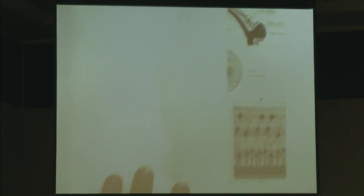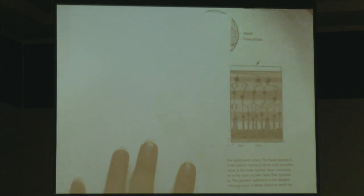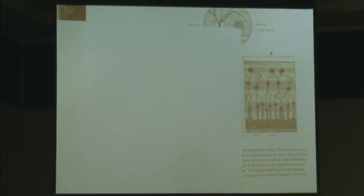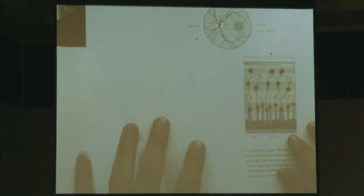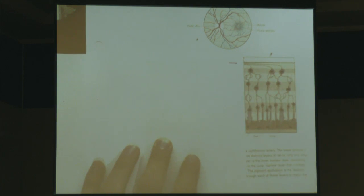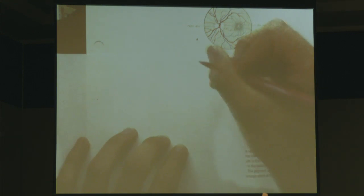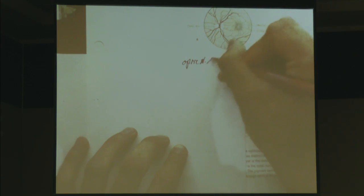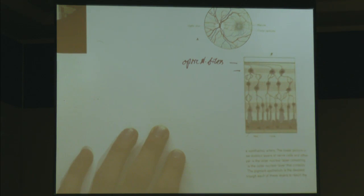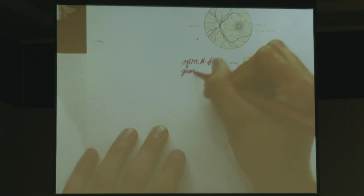Next picture is one of my personal favorites — the cross section of the retina. There are a couple of layers you'll need to know. The uppermost layer is optic nerve fibers, followed by ganglion cells, then the inner synaptic plexus as a landmark layer.